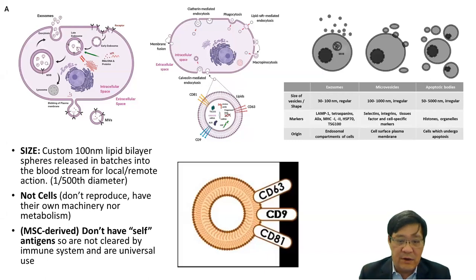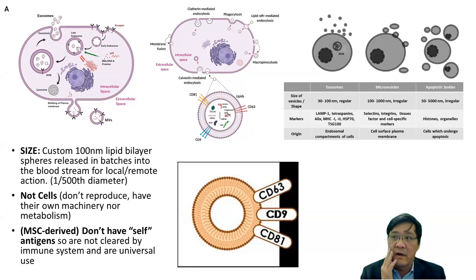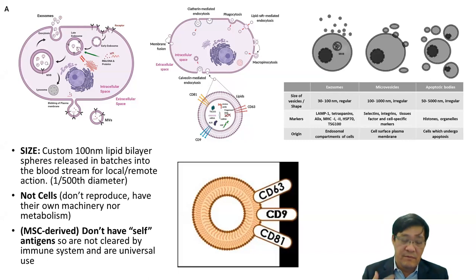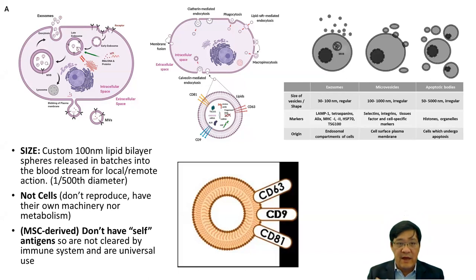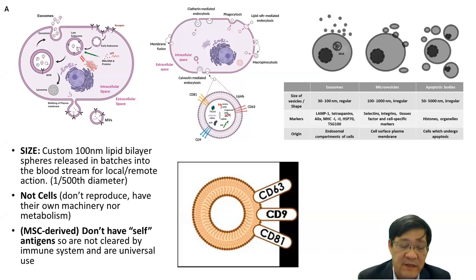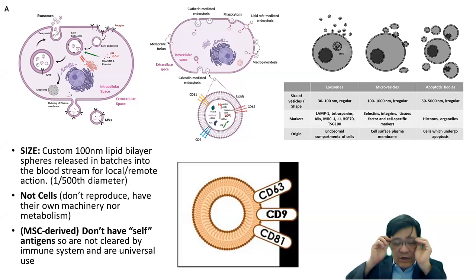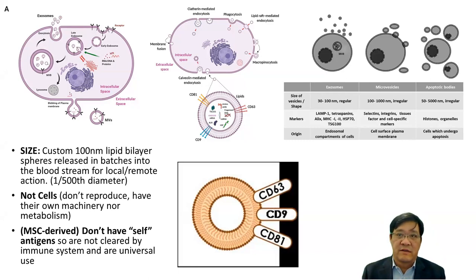For those who don't know, exosomes are not cells — they are 1/300th the diameter. Therefore, they don't have their own machinery to copy DNA or make proteins. They're merely the messages, the letters, the FedEx packages, used to communicate with other cells. The exosomes we use don't have self-antigens. Certain exosomes from immune cells can have self-antigens, which cause reactions like graft versus host, host versus graft, and rejection of foreign stem cells.